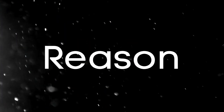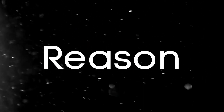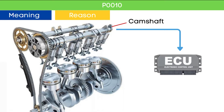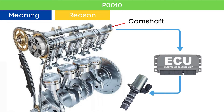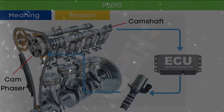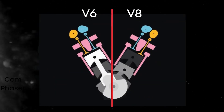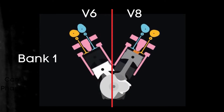Now, let's learn why P0010 was triggered. The camshaft position sensor measures the position of the camshaft and sends this signal to the ECU. The ECU then sends a pulse command to the variable valve timing VVT solenoid to advance or delay the cam position based on the engine load and speed. The VVT solenoid adjusts the cam phaser accordingly. In the case of V6 or V8 engines, there are two camshafts — bank 1 and bank 2.